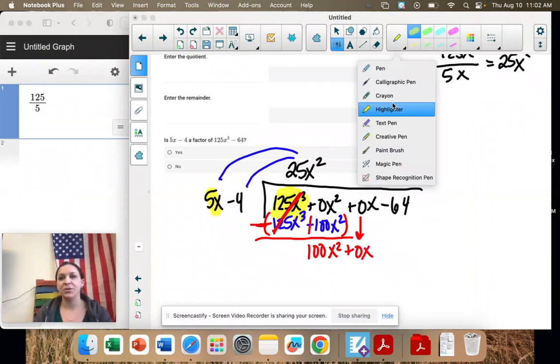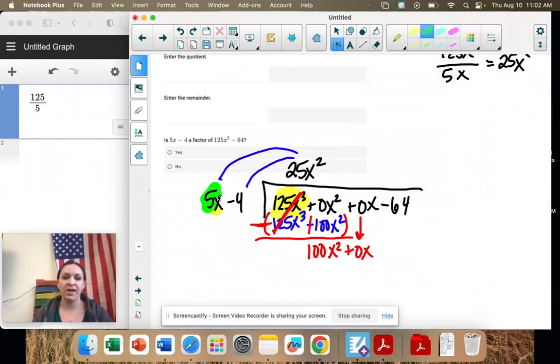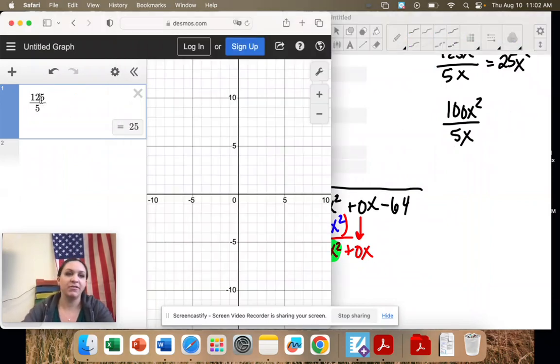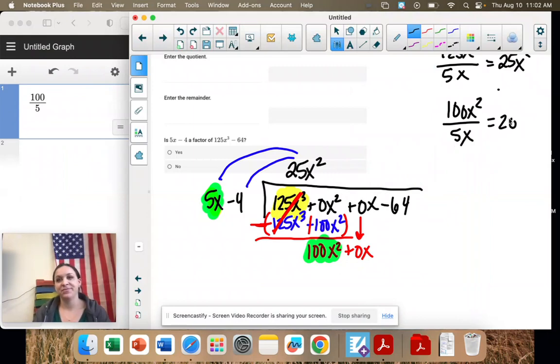Okay, let's do it again. We have 5x, and we need 100x². So what do we need to multiply by? Well, what's 100 divided by 5? 20. And then x, because we have 2 and we're taking out 1.